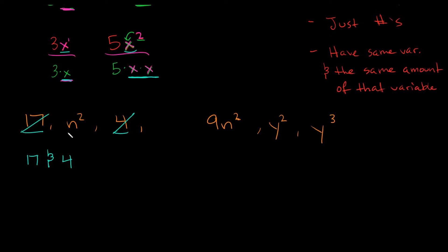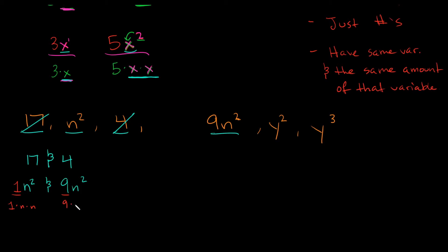Now let's move on to n squared. We have to find something that doesn't just have an n but specifically an n squared, so that would be 9n squared. These are like terms. This variable has no coefficient next to it, so that means there's a 1 there. We have different coefficients — a 1 and a 9 — but the coefficients don't matter. What matters is that they have the same variable and the same amount of the variable. We have 1×n×n here and 9×n×n here — both have two n's. So these are like terms.